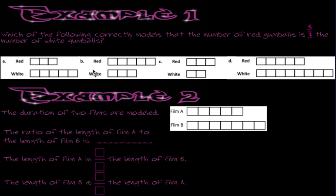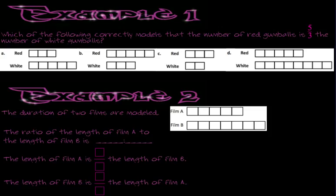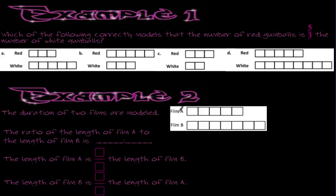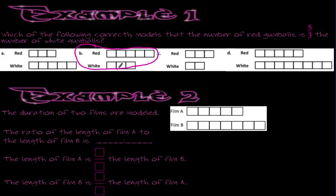We're going to start out fairly simple with the gumballs example. Since this problem doesn't say 'ratio,' it says: which of the following correctly models the number of red gumballs is 5 thirds the number of white gumballs? Since the word ratio isn't in here, we know 5 thirds is a fraction and not a ratio. Looking at options A, B, C, and D, if you said B, you would be correct. So you're really taking that ratio — here we would say the ratio is 5 to 3, meaning for every 5 red gumballs, I have 3 white gumballs.